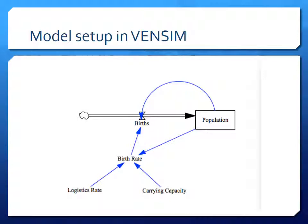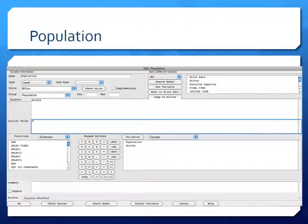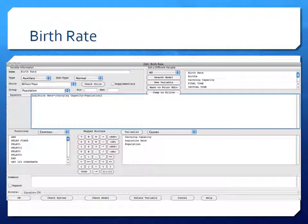Looking at how this model is parametrized: the population variable is a level — a stock — in Vensim, with units of billions. It's fed by births as a positive input, and the initial value is set to seven billion, reflecting the current state of population, to initialize the model.